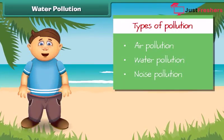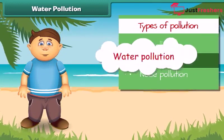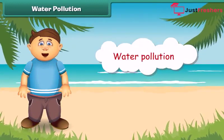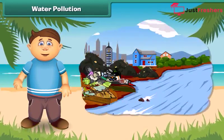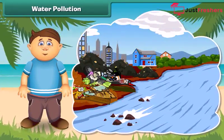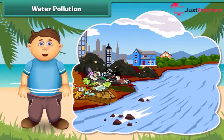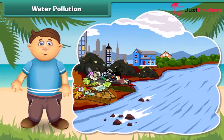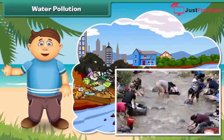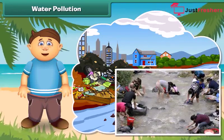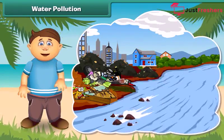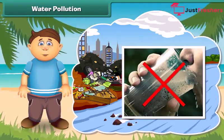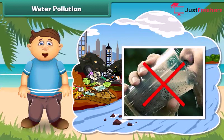Now let's know about water pollution. Like air, water also gets polluted. Look at this river — it is very dirty. It receives sewage from homes and wastes from factories. Some people also wash their clothes and throw waste into it. We should not drink this water as it contains germs and may result in diseases.